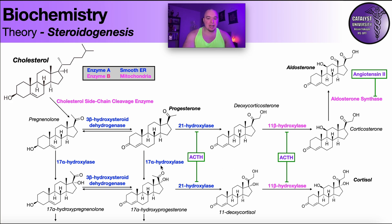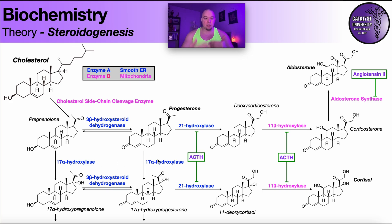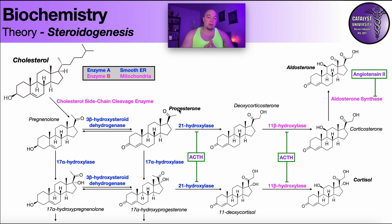Coming back to 17-alpha-hydroxylase — this enzyme is a major committed step in going from synthesis of mineralocorticoids to glucocorticoids like cortisol. But its function is a lot more profound. It turns out that 17-alpha-hydroxylase is part of a multifunctional enzyme, CYP17A1. Depending on the state of that enzyme, it can act as a 17-alpha-hydroxylase, or it can function entirely differently and direct the steroid into sex steroid synthesis.